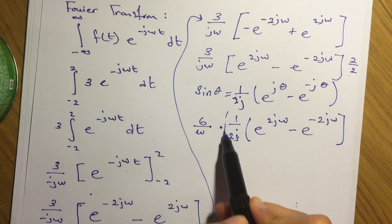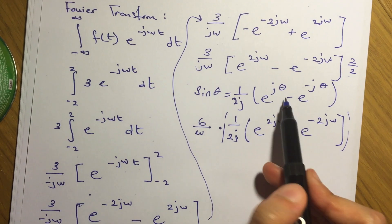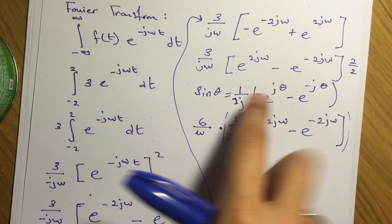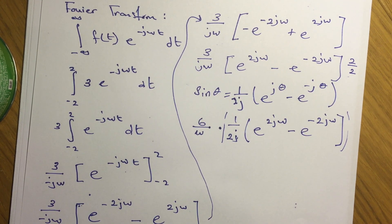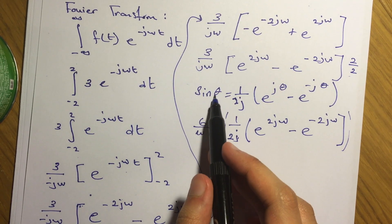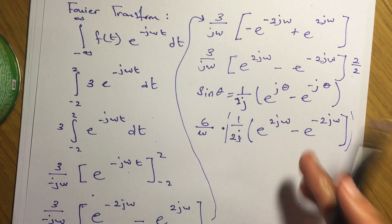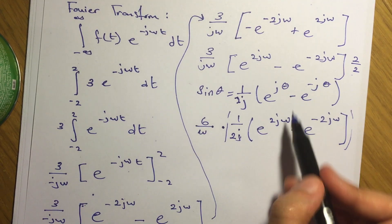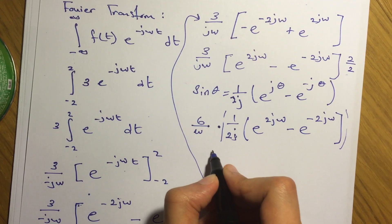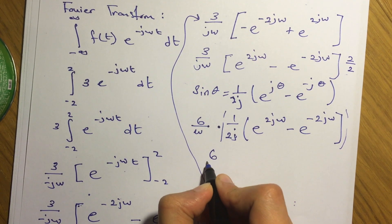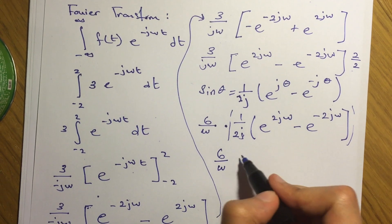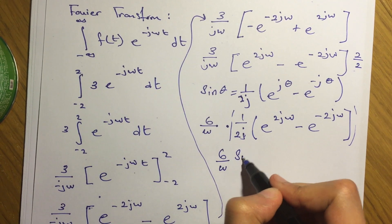So this is exactly like the complex number equation. The delta here in our equation is 2 omega. So we can say that 6 over omega times sine of 2 omega.